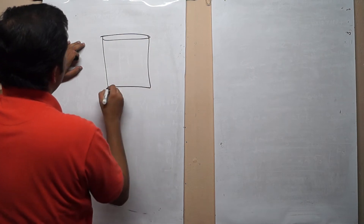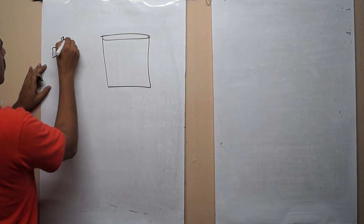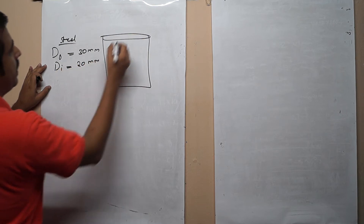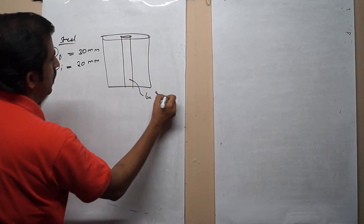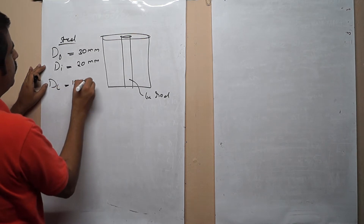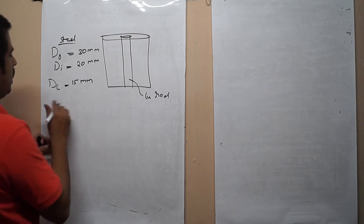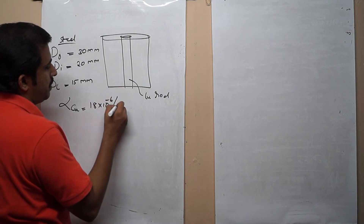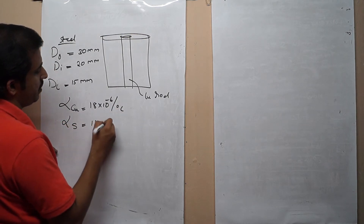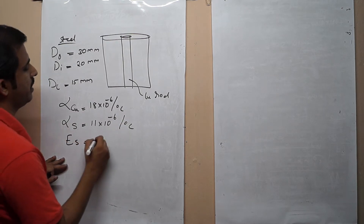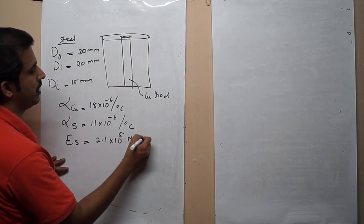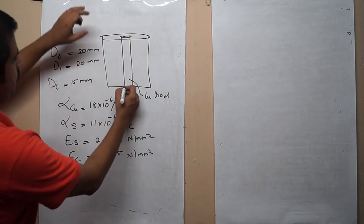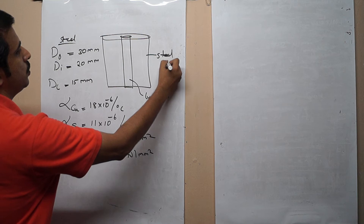The steel tube has outer diameter equal to 30 mm and inner diameter equal to 20 mm. Inside the steel tube there is a copper rod with diameter equal to 15 mm. The coefficient of linear expansion of copper is given as 18 × 10⁻⁶ per degree Celsius, and the coefficient of thermal expansion of steel is given as 7 × 10⁻⁶ per degree Celsius. The elastic modulus of steel is 2.1 × 10⁵ N/mm², and the elastic modulus of copper is 1 × 10⁵ N/mm².